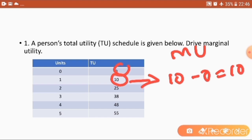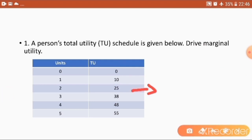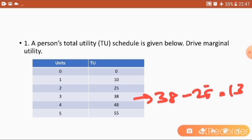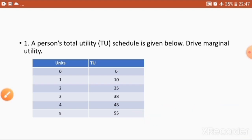For the third unit, it is 25 minus 10 which gives 15. Then 38 minus 25 gives 13. And then 48 minus 38 gives 10. And the last one, 55 minus 48, gives 7.